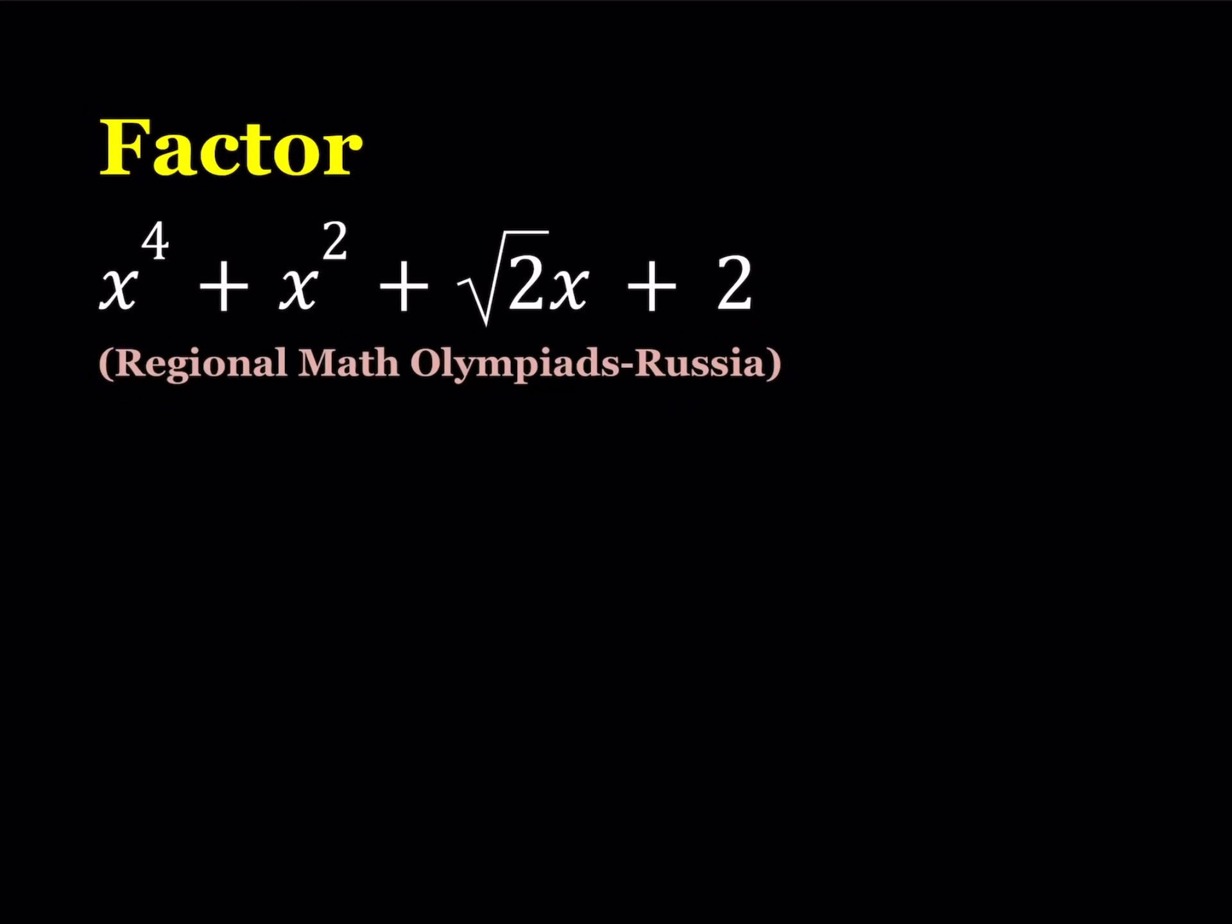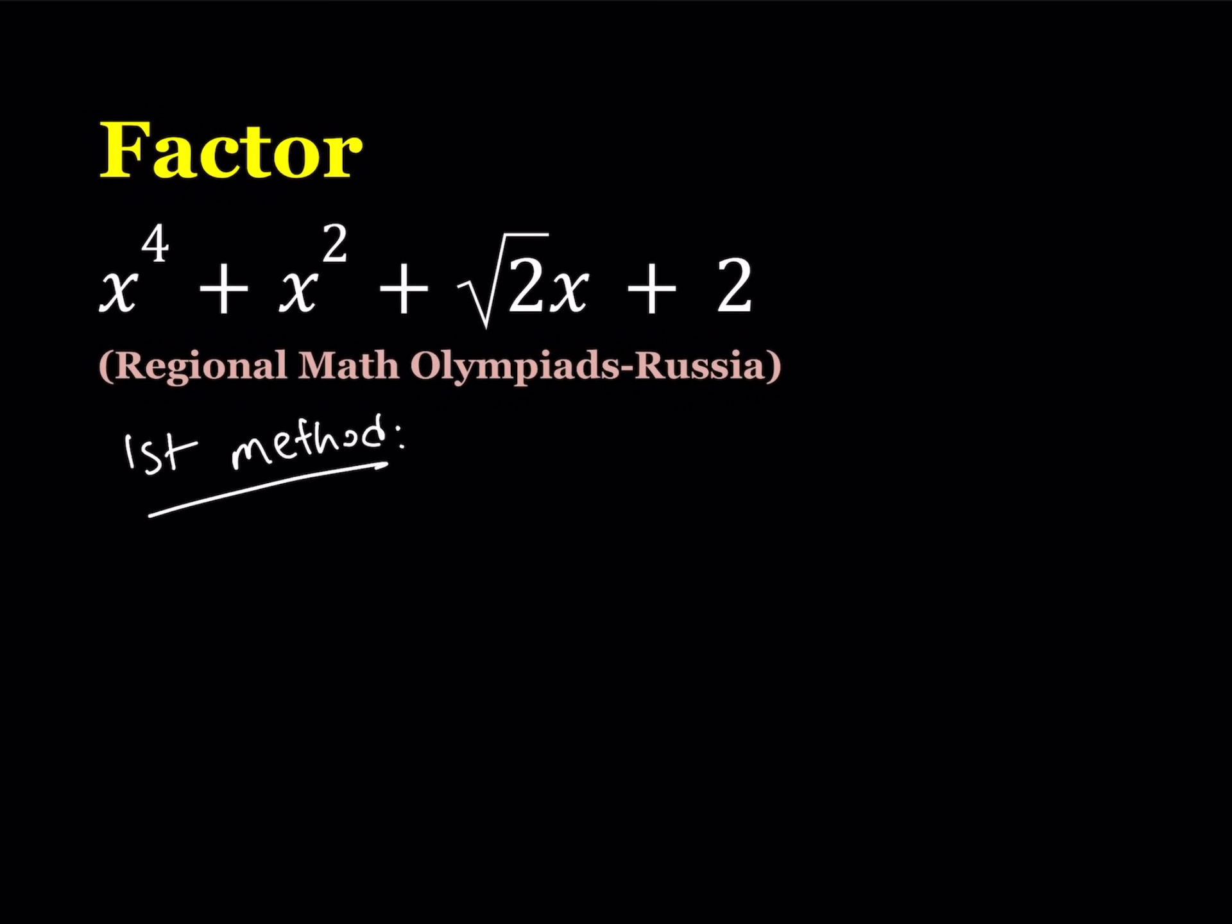I'll be presenting two methods, so let me start with the first one. First method is going to be a little more painful in my opinion, but you get to decide. I'm going to write this expression x to the fourth plus x squared plus square root of two times x plus two as a product of two quadratics.